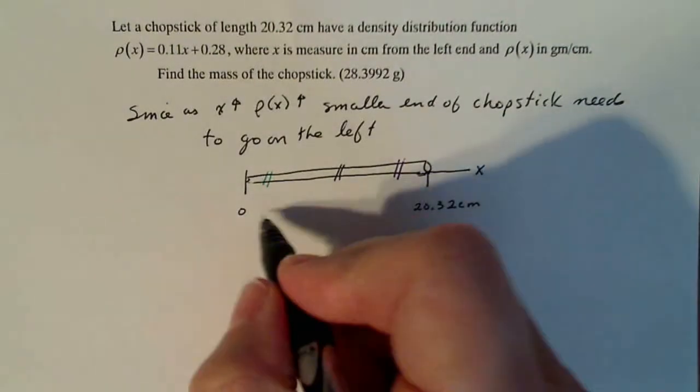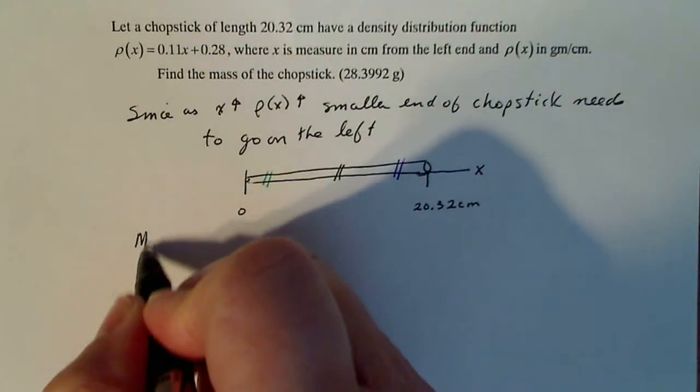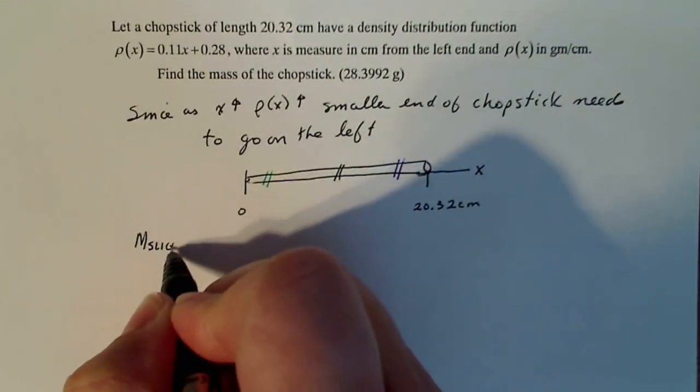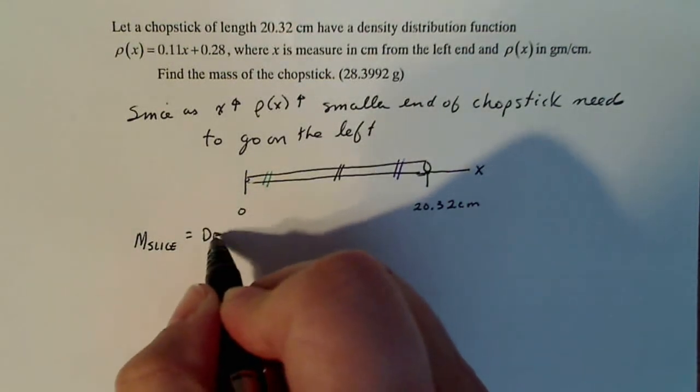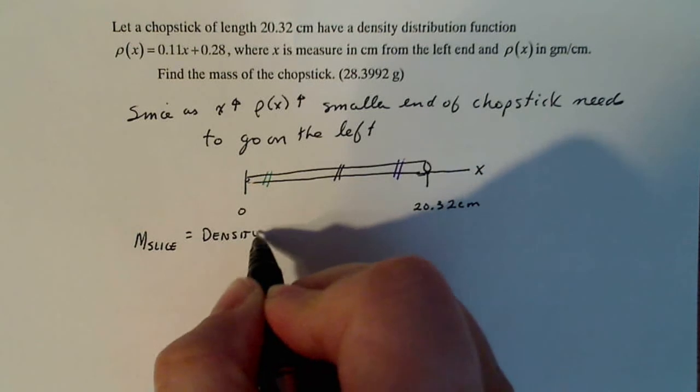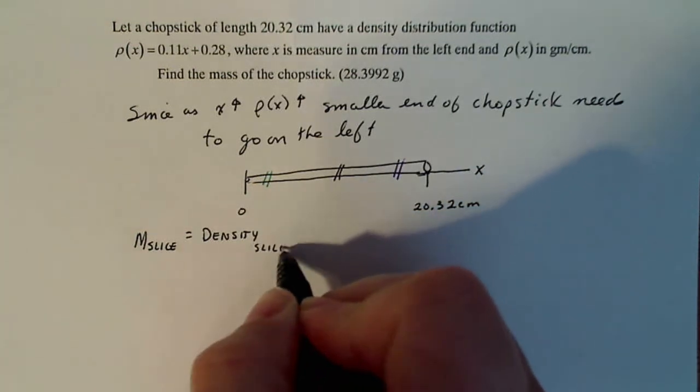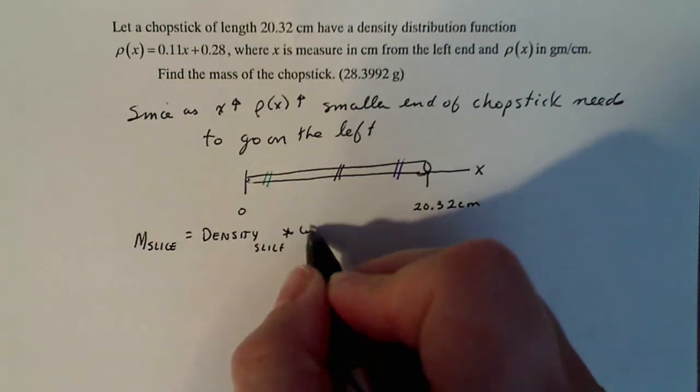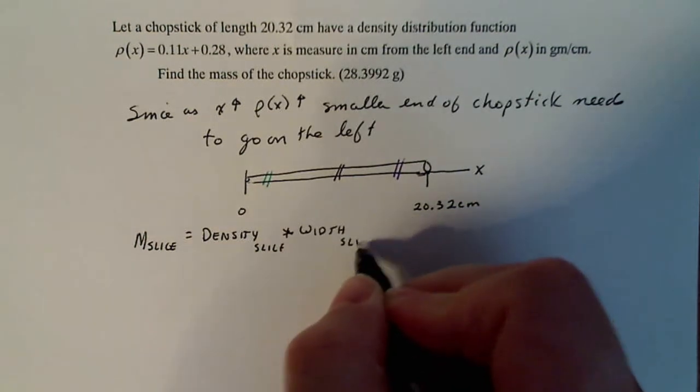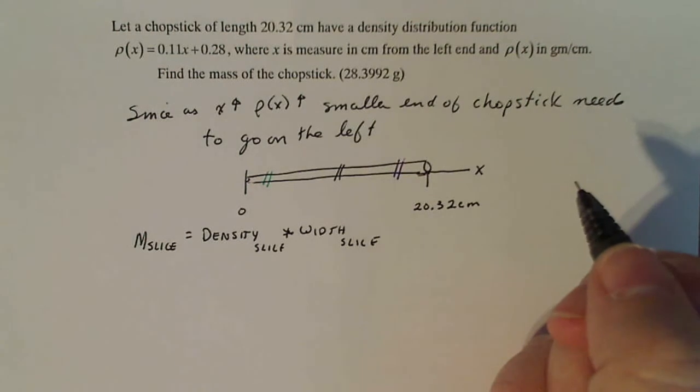Now we're going to worry about finding the mass on one of these slices. I know that mass is density of the slice times the width of the slice. How do I know that? Normally we sometimes use area, sometimes we use volume. In this case, I'm just using width.